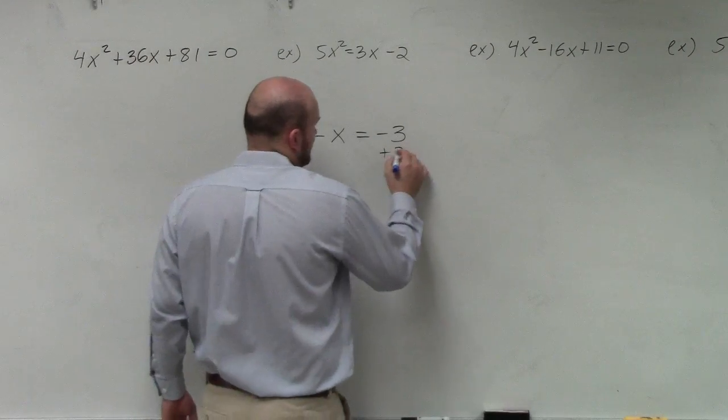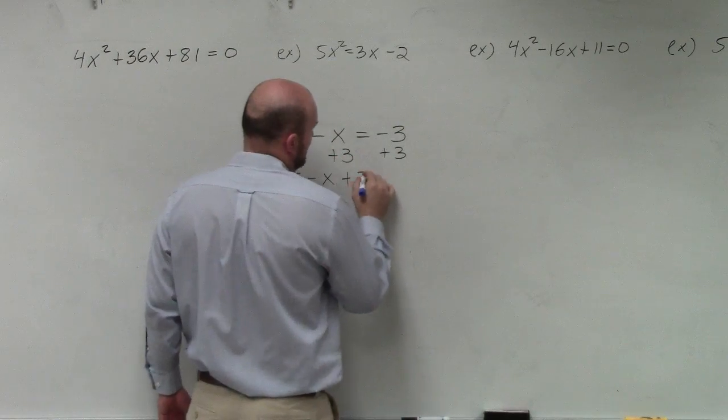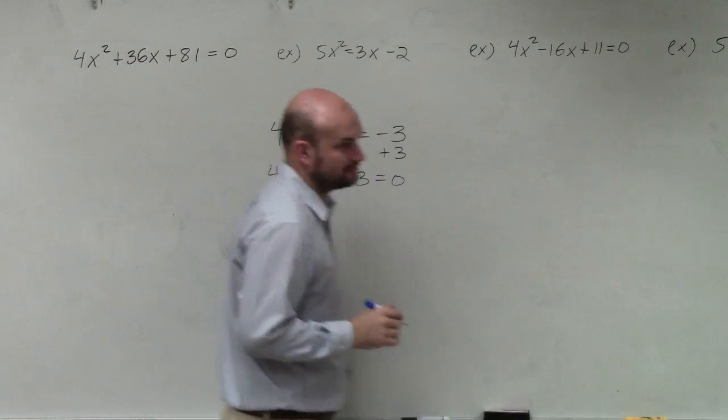So first thing I'm going to do, add 3 to both sides. So I have 4x² - x + 3 = 0.